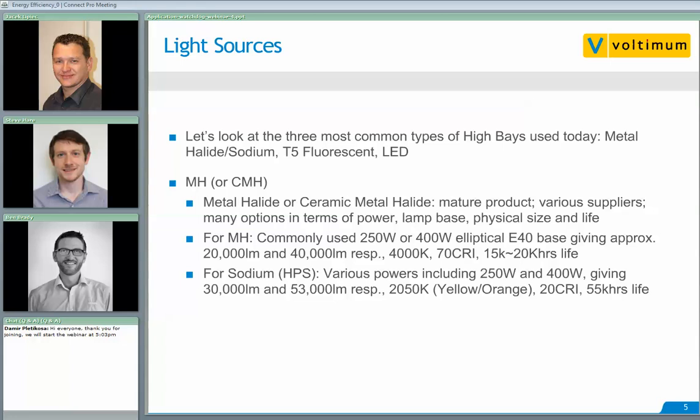The 250W and 400W metal halide lamps give approximately 20,000 lumens and 40,000 lumens respectively for the bare lamp. You can get them in 4,000K, 70 CRI, and they have a lifetime of about 15,000 to 20,000 hours before failure. For high pressure sodium, 250-watt and 400-watt versions give 30,000 or 53,000 lumens respectively — quite a bit higher than metal halide. However, the color temperature is about 2,050 Kelvin, giving a very yellow or orange hue with a very low CRI of 20, though it has a very long lifetime of about 55,000 hours.